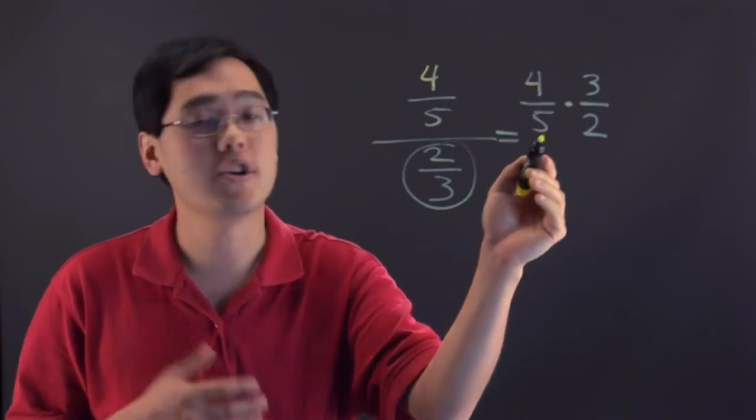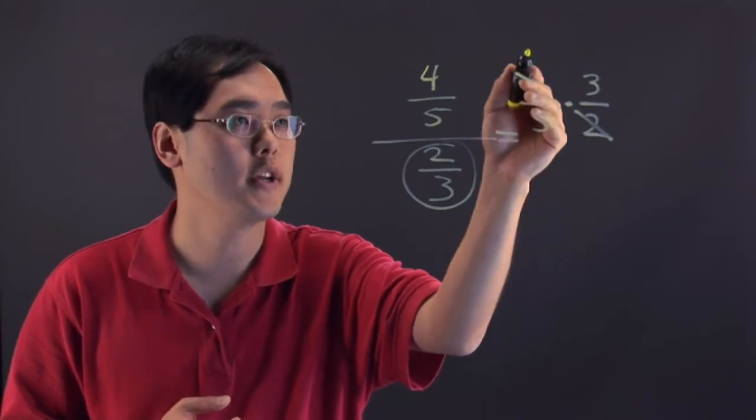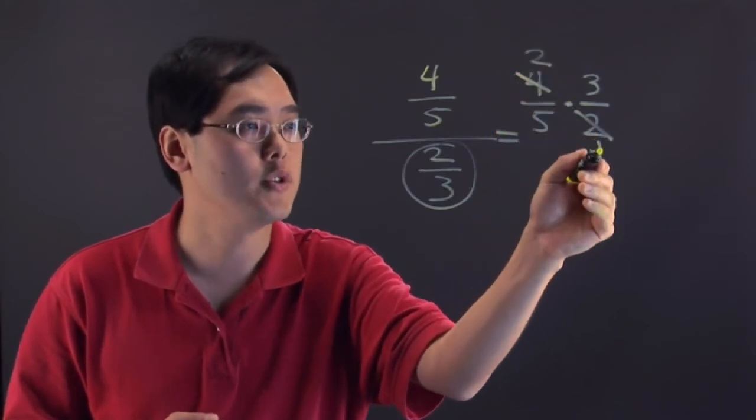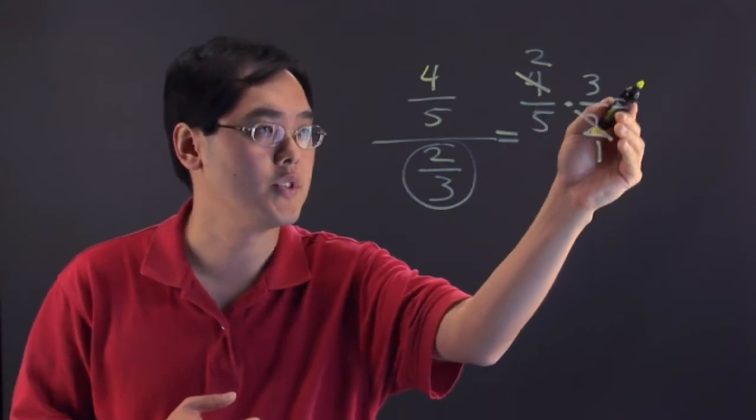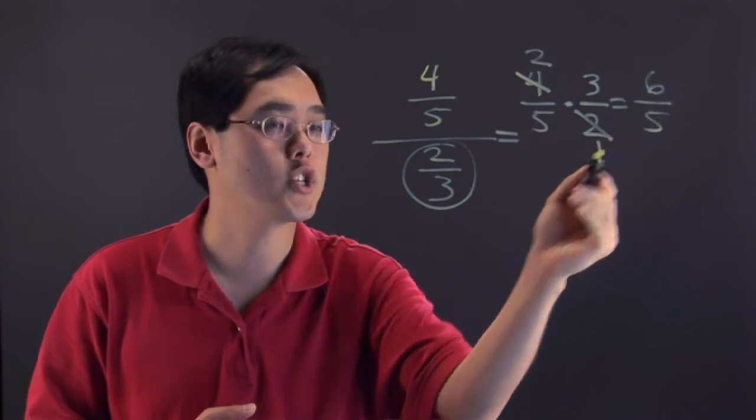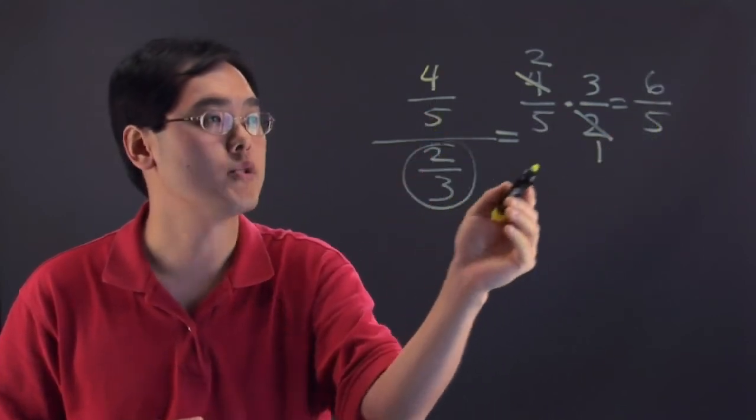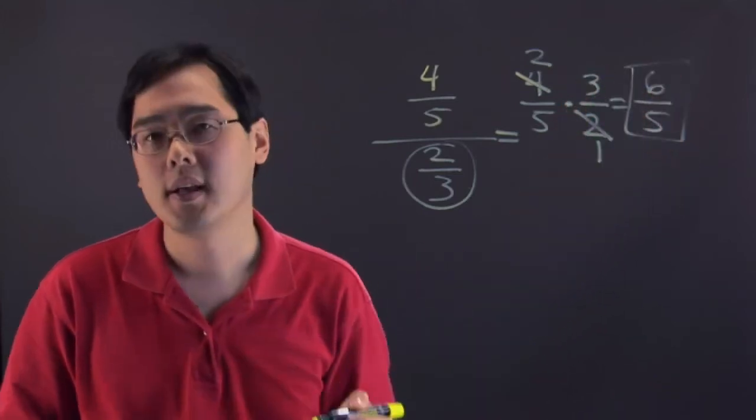And the 4 and the 2, as you can tell, is reducible, so we're going to reduce both numbers by 2. So 4 divided by 2 is 2, 2 divided by 2 is 1, and then you're going to multiply across. 2 times 3 is going to give you 6, and 5 times 1 is going to give you 5. So in actuality, 4 fifths divided by 2 thirds is really going to give you 6 fifths in the very end.